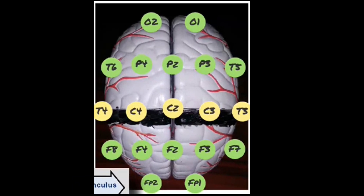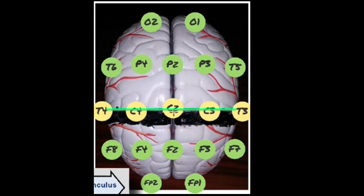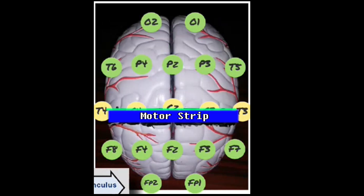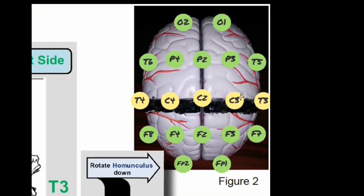You can see the electrodes. The central sulcus — also called the rolandic fissure — this line right in here demarcates or separates the frontal lobe from the parietal lobe. The motor strip runs across from left to right at the frontal lobe, and just behind the central sulcus but adjacent to the motor strip is the sensory strip. They're paired up very closely — sensory in the parietal lobe, motor in the frontal lobe.